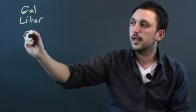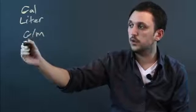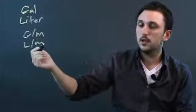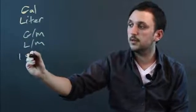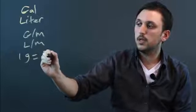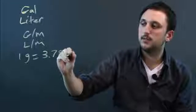So when we say gallons per minute, we're going to try to change it to liters per minute. Now one gallon equals 3.785 liters.